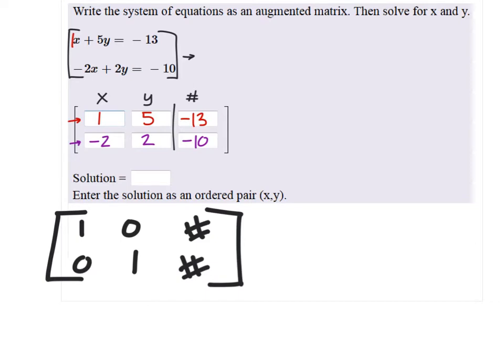So, in other words, what this means is this bottom row, because this is the y column, would have one y equals whatever the number is. Does that make sense? If I took that row out of the matrix, that's what I would have.